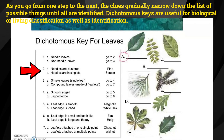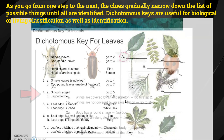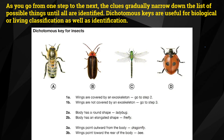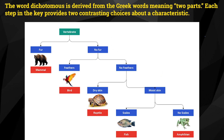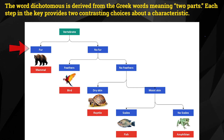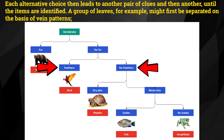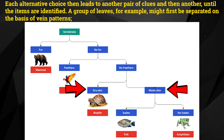As you go from step one to the next, the clues gradually narrow down the list of possible things until they are all identified. Dichotomous keys are useful for biological or living classification as well as identification. The word dichotomous is derived from the Greek words meaning two parts. Each step in the key provides two contrasting choices about a characteristic, and each alternative choice leads to another pair of clues until the items are identified.